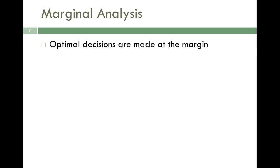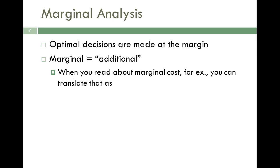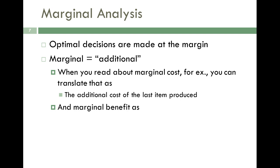Another important concept is marginal analysis. When producers and consumers are deciding how much more to buy or produce, they look at what we call the margin — the last unit consumed or produced. From here on, when you see the term 'marginal,' mentally translate it to 'additional,' since it's not used that way in normal English. For example, marginal cost is the additional cost of the last item produced — say, it costs $25 to make one more unit; that's the marginal cost. On the consumer side, marginal benefit is the additional benefit of the last item consumed, which could be measured as revenue, or more generally as happiness, utility, or satisfaction.